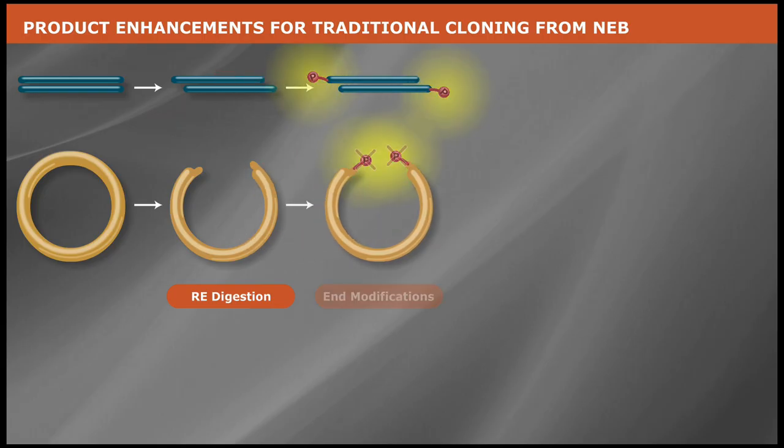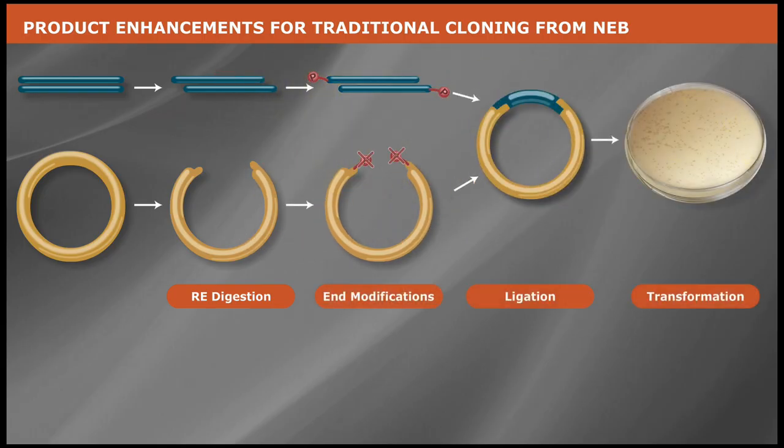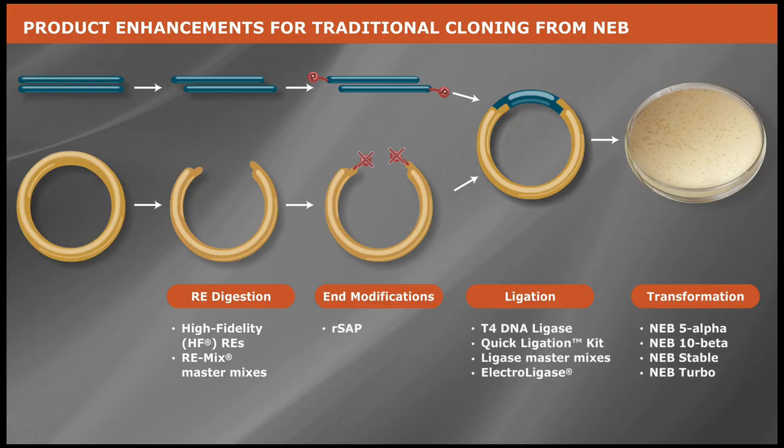Although the basic workflow in traditional cloning has not changed much since the 1970s, the introduction of faster and much more robust enzyme and buffer combinations, as well as wider specificities in the last decade, has made this approach easier and faster than ever before.